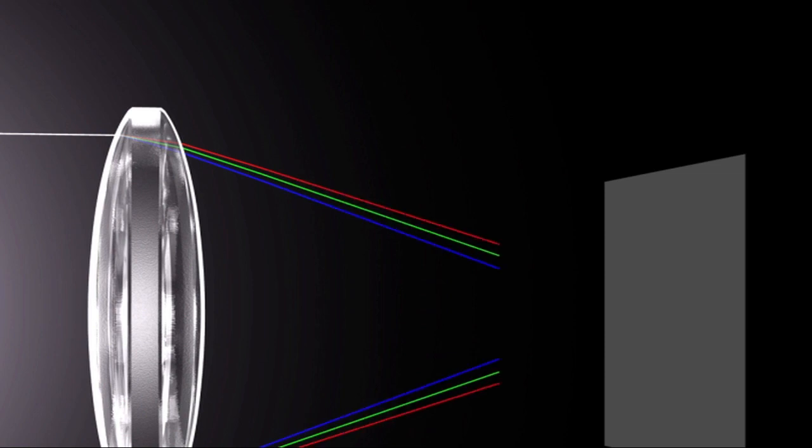When light passes through a convex lens, the focal point for red light, which has a long wavelength, is farther away from the lens than the focal point for blue light, which has a short wavelength. This causes colors to shift.